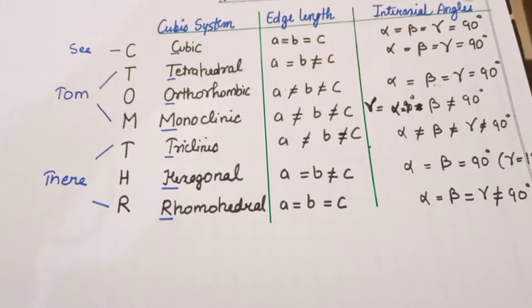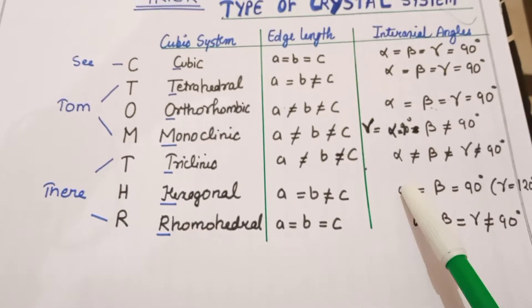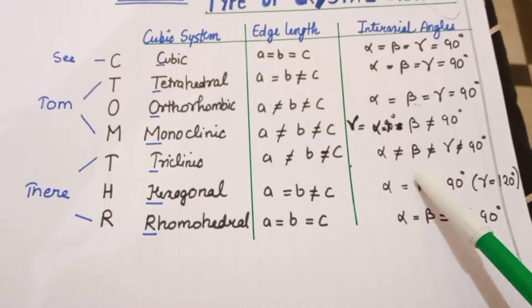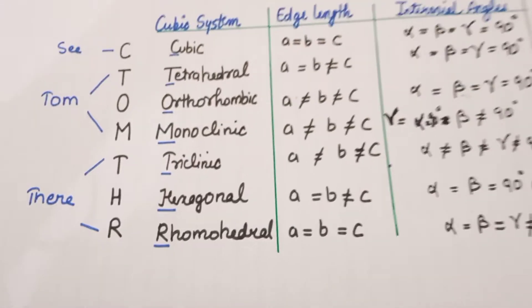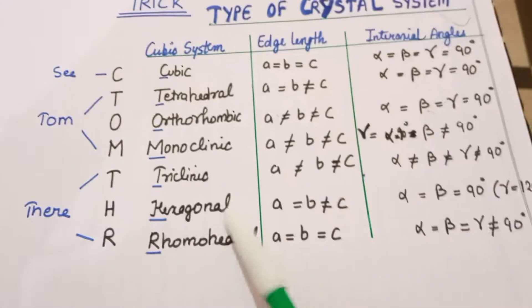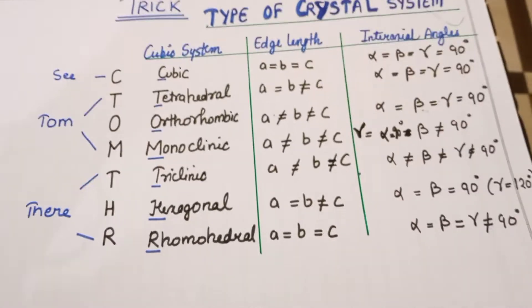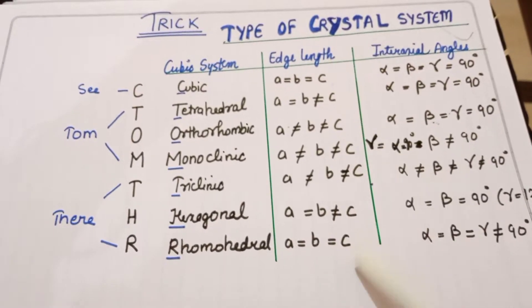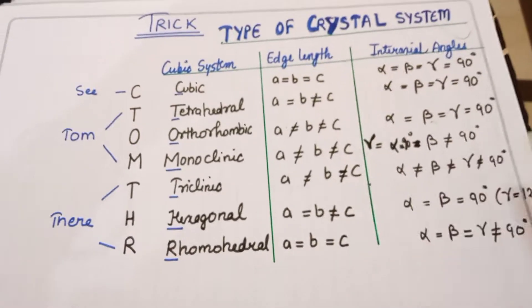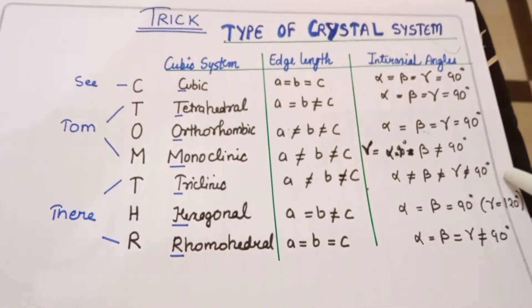So next is Triclinic: Alpha is not equal to Beta, not equal to Gamma, not equal to 90 degrees. If you look at Triclinic, there are no edges or interaxial angles that are equal.